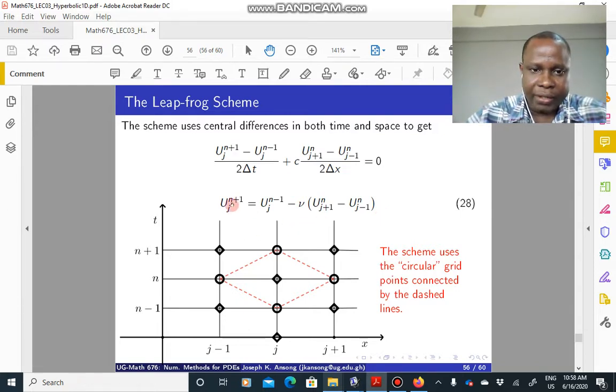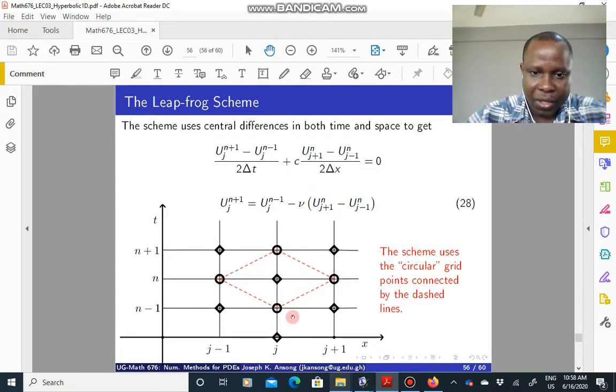If you look at this, it uses U_j^(n+1), that is this guy, U_j^(n-1), which is this guy, U_(j+1)^n, which is this, and then U_(j-1)^n, which is this. So this circular point here is what the scheme uses.